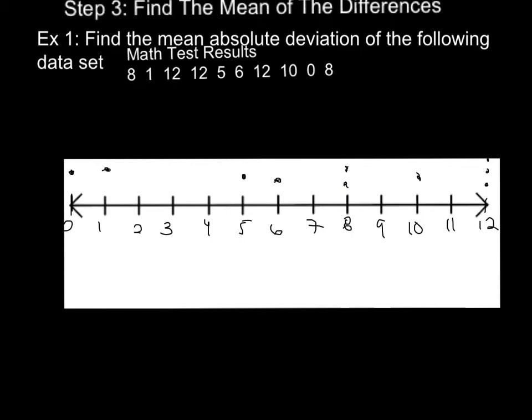Now I'm going to add in where my mean is. Remember we said the mean was 7.4. So that's going to be between the 7 and the 8, almost in the center, but a tiny bit closer to the 7. So we're going to call that 7.4.